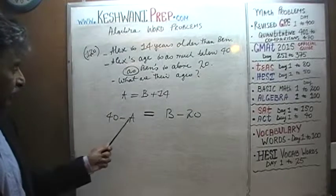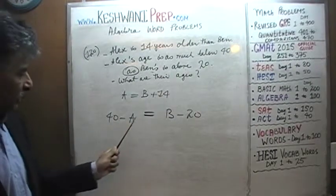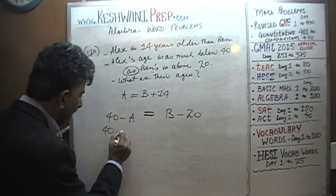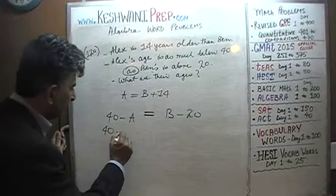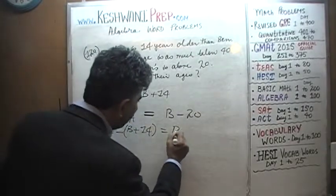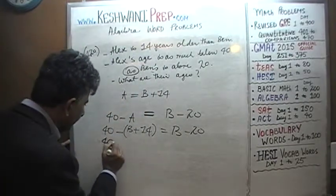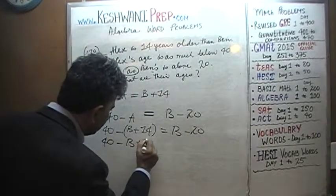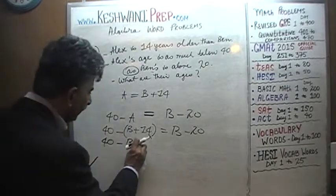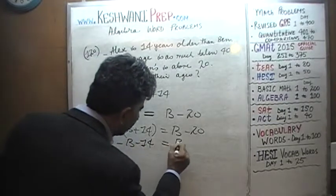The rest is downhill. We're going to substitute. We have A equals B plus 14, and we put it into the second equation. So 40 minus (B plus 14) equals B minus 20. Opening the parenthesis, the negative is distributed, giving us 40 minus B minus 14 equals B minus 20. Pay attention — it becomes negative 14, not positive 14. Otherwise it's going to be a problem.